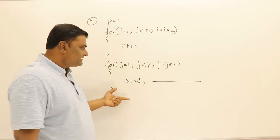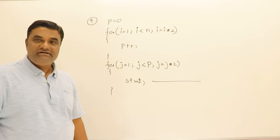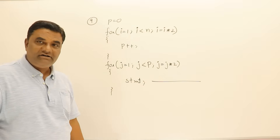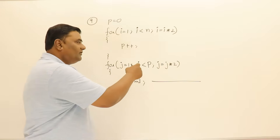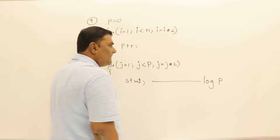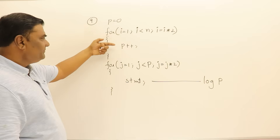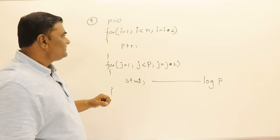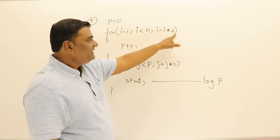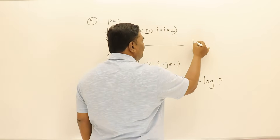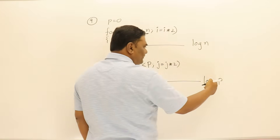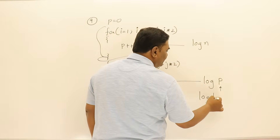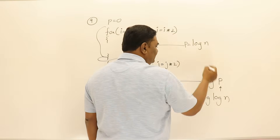Here we have two independent loops. In the second loop, j starts at 1, is less than p, and is multiplied by 2 each time — so it takes log p time. What is p? In the first loop, p is incremented: i goes from 1 to n with i multiplied by 2 each time, so that loop repeats log n times, making p equal to log n. Therefore the second loop takes log of log n time — the time complexity is O(log log n).